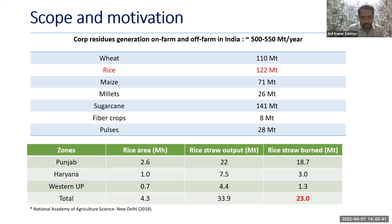India is one of the largest agro-based economies and produces approximately 500 to 550 million tons of agro-based residues annually. Among them, rice is a major agricultural residue. India is the world's second largest rice producer, producing approximately 122 million tons of rice. Northern India is a unique case.